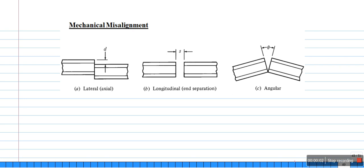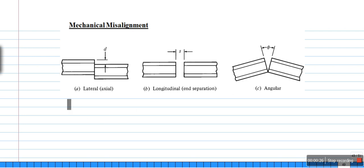Continuing from the previous lecture, let us discuss a further topic under fiber-to-fiber joints. The first one is called mechanical misalignment, and this is the most common problem that occurs when we try to join two fibers. There are three different types of mechanical misalignment — three most common mechanical misalignments in a fiber-to-fiber joint.